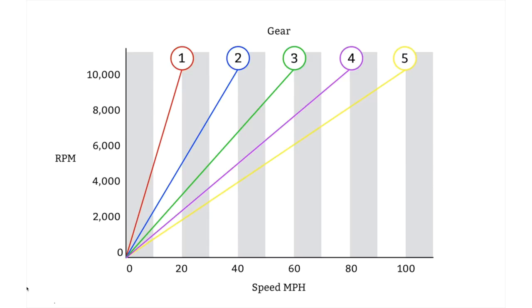So to better understand why we need to heel and toe we're going to take a quick look at a gear ratio chart for a race car or in fact a road car. On the bottom axis here you see we have the speed going from zero to 100 and on the vertical axis we have the RPM going from zero to ten thousand.